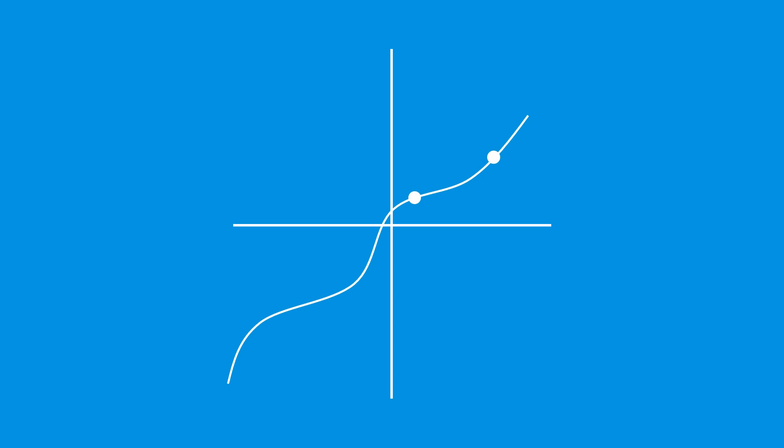Then the slope of the line between the points is computed. The closer the two points are together, the more accurately that slope represents the true derivative of the function.